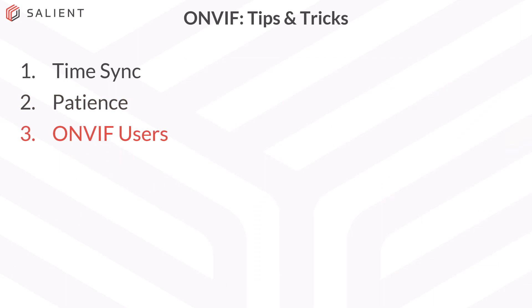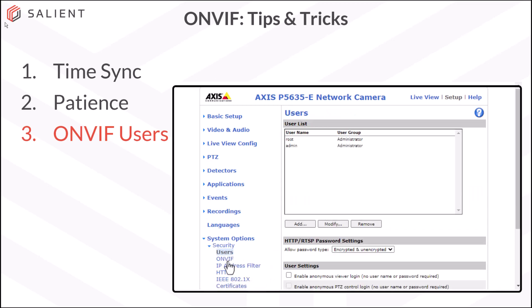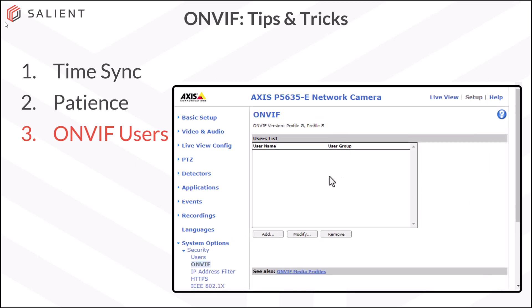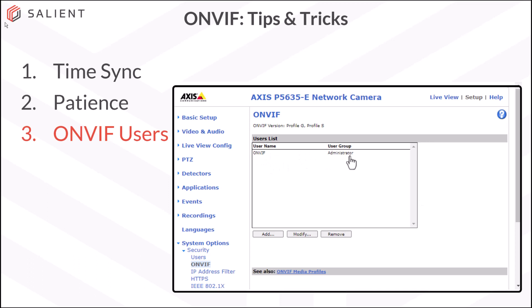The next tip is ONVIF users. While most cameras can be added to CompleteView using a default admin or root account, some camera manufacturers require the creation of a separate ONVIF user. To configure or add an ONVIF user, open up the camera's web page and locate your ONVIF configuration area. Different camera manufacturers and models have different locations for settings, so check your camera's documentation. For this camera, I'll locate my ONVIF config, select it from the list, select add, enter a username, the password, and verify the password. I'll make sure the user has administrative privileges, check that box, select okay, and now I've created my ONVIF user with admin privileges.